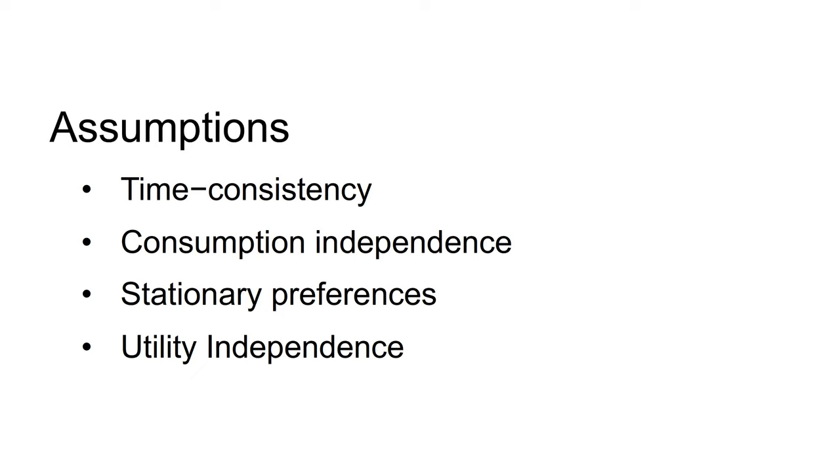A fourth assumption is utility independence. Under utility independence, all that matters is maximizing the sum of discounted utilities. Decision makers have no preference for the distribution of utilities. They don't seek to delay gratification or get unpleasant things out of the way.